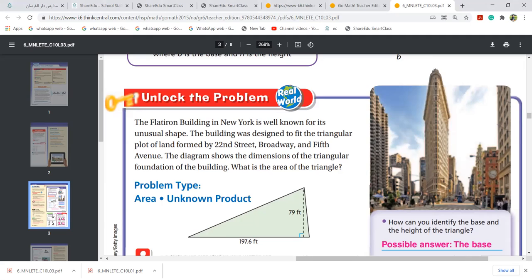The Flatiron building in New York is well known for its unusual shape. The building was designed to fit the triangular plot of land formed by 22nd Street, Broadway, and 5th Avenue. The diagram shows the dimension of the triangle foundation of the building. What is the area of the triangle?